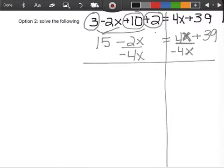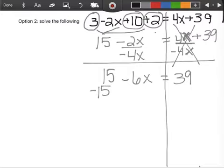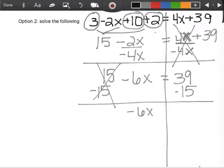That cancels out. And all I have is 39 equals, and on this side I have to do some math. Negative 2 minus 4 is negative 6x. And I have 15. We're at a two-step problem now. To get rid of a positive 15, I will subtract 15 from both sides to cancel out my 15.